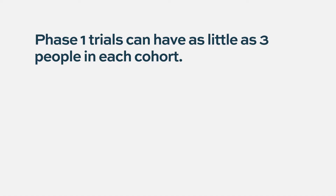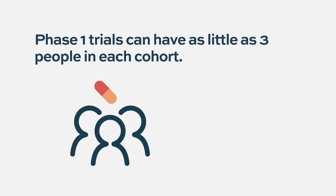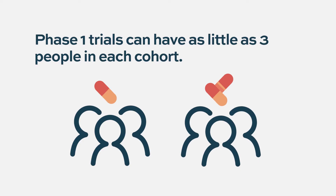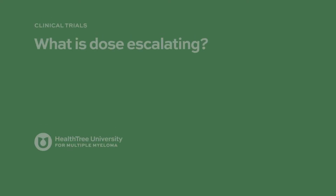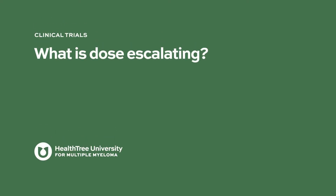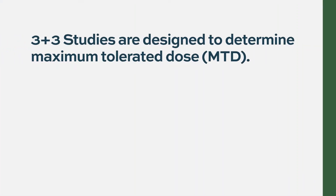You're just looking to see if it's safe to give in people. Phase ones can have as little as three people in each cohort — three people taking five milligrams, three people then take ten milligrams, etc. But the overall phase one will often have many more than that, and it really depends — it can be a variable number of patients.